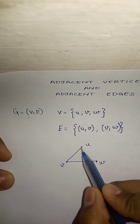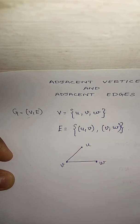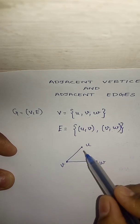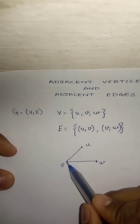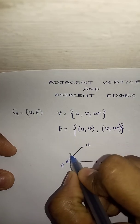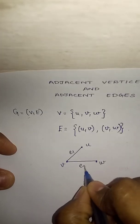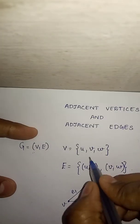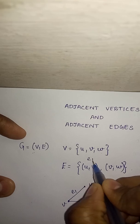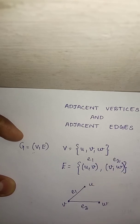So U and V are said to be adjacent vertices. UV is one edge joining them. The edges are named E1 and E2 — E1 is UV and E2 is VW.